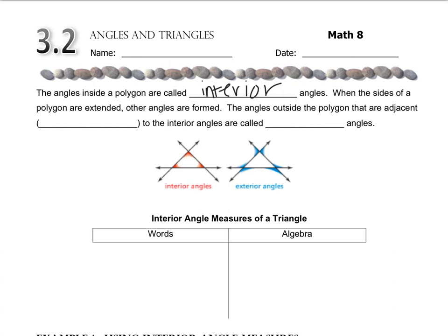Like an interior decorator deals with the furniture and the walls and all the things that are inside a house. When the sides of a polygon are extended, we have other angles called exterior angles. Exterior angles aren't just any random angle outside of the triangle — they are an extension of a side length. We extend the side a little further, and then this blue piece right here would be considered an exterior angle, because it's an extension of one of the sides.